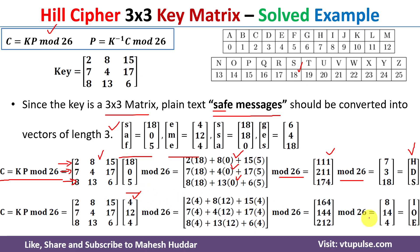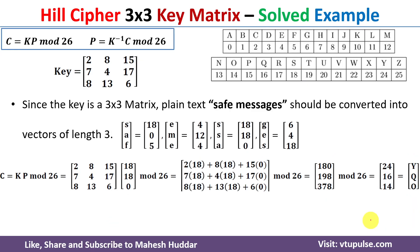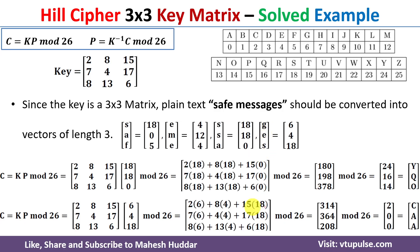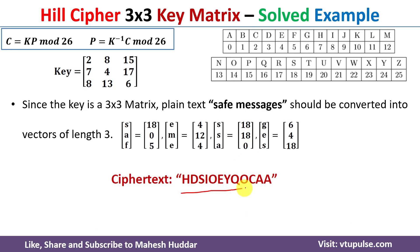Similarly, the second vector 'EME' gives values 8, 14, and 4 after the operation, which correspond to the letters I, O, E. For the third vector 'SSA' (values 18, 18, 0), we get 24, 16, and 14, which is Y, Q, O. The last vector 'GES' is encrypted to C, A, A.